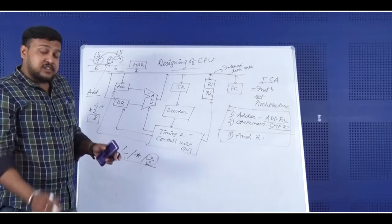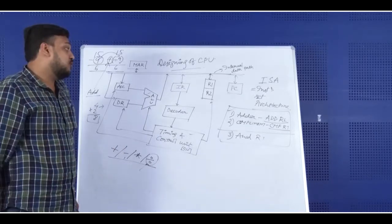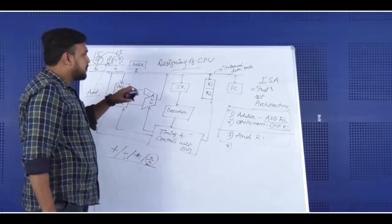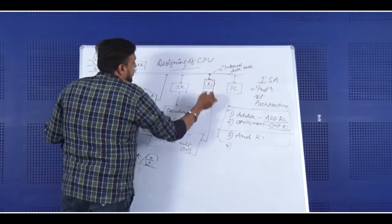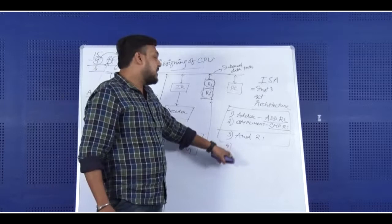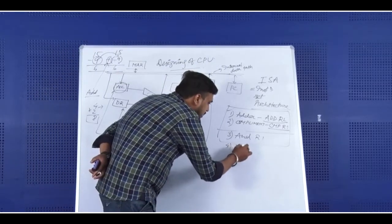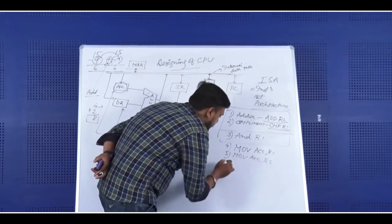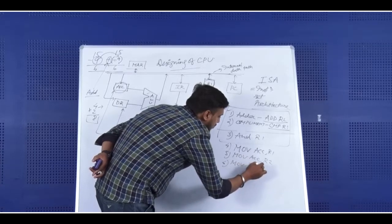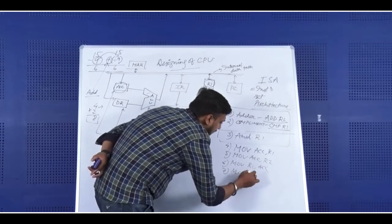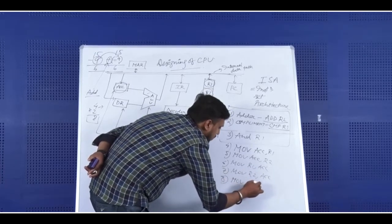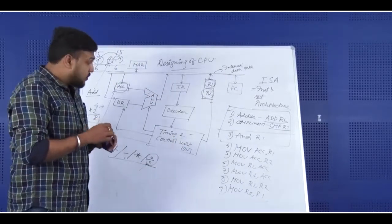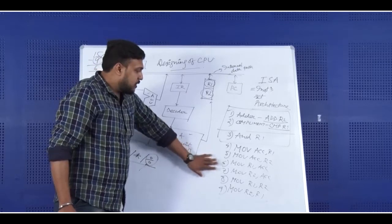To complete the instructions and architecture, we need some other types of operations — the MOV operation. We have the accumulator, R1, and R2. Different types of MOV operations are needed. For example: MOV Accumulator R1, MOV Accumulator R2, MOV R1 Accumulator, MOV R2 Accumulator, MOV R1 R2, and MOV R2 R1. That covers all permutations of R1, R2, and accumulator.